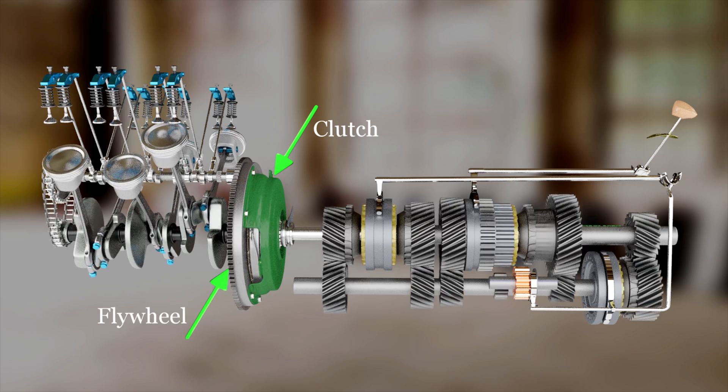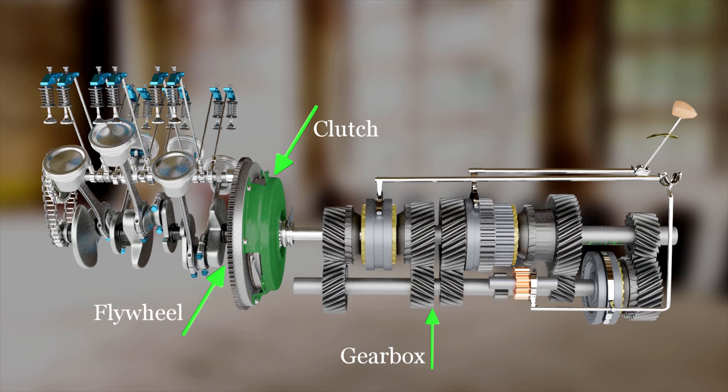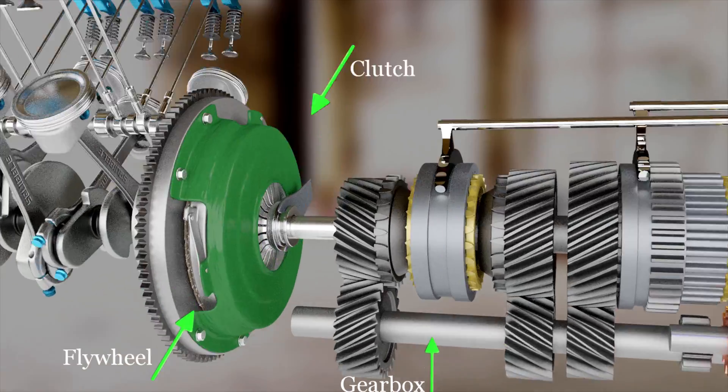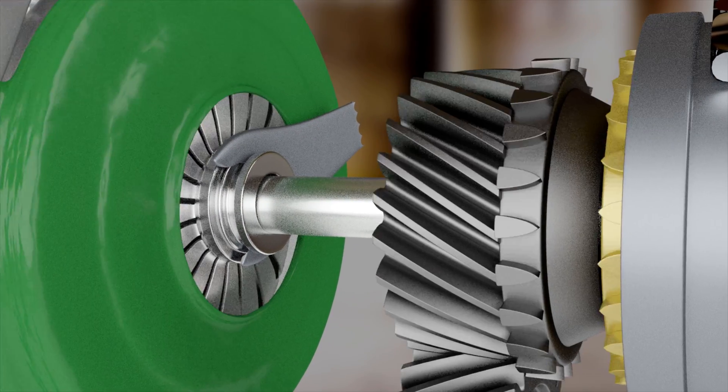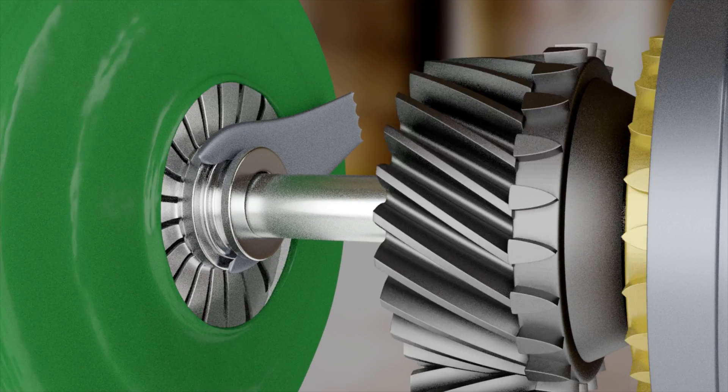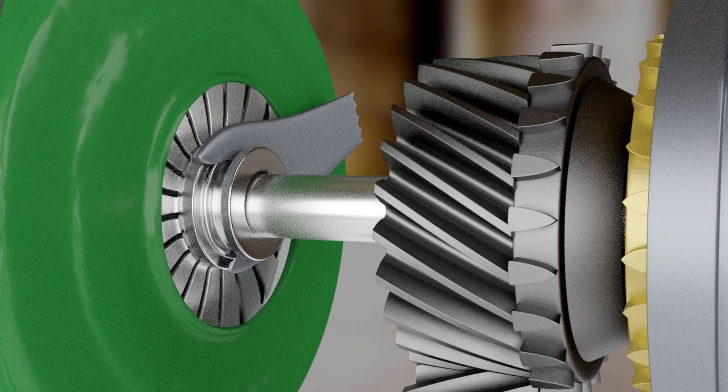Thus, the clutch is in between the engine and the gearbox, and whenever the clutch pedal is pressed, the clutch disengages the engine from the gearbox and power does not flow to the gearbox.